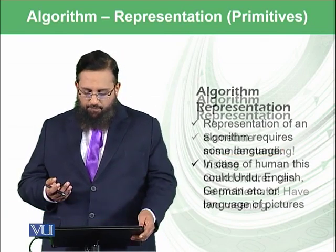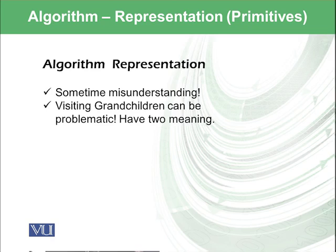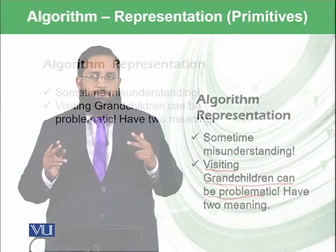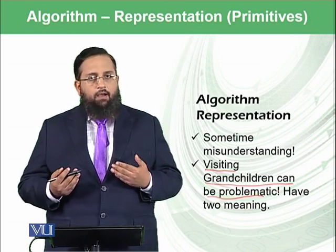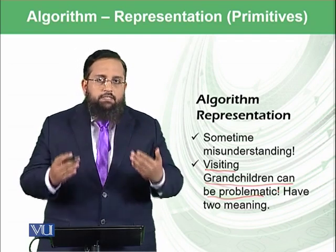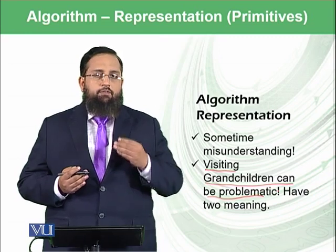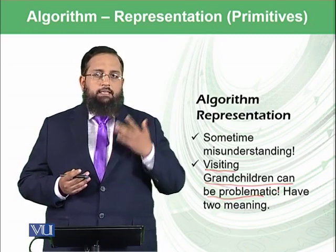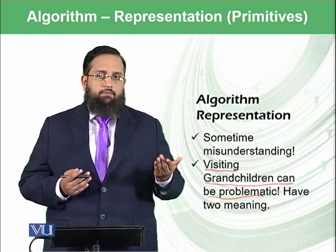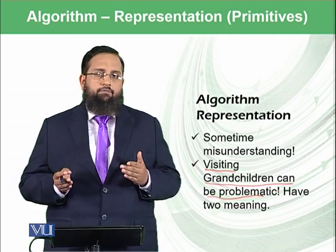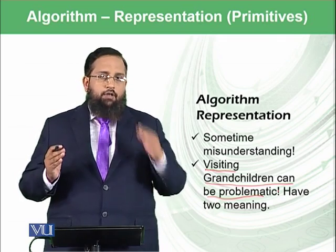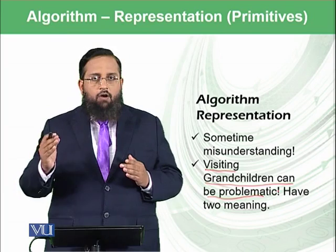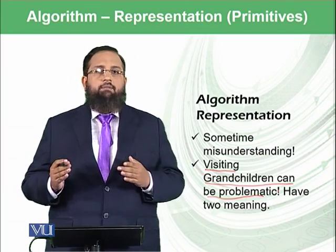For example, if I give a statement like 'visiting grandchildren can be problematic,' this might have two meanings. One is that when grandchildren visit you, that is problematic. The other meaning could be that when you visit your grandchildren, that is problematic. So even the language humans speak can have ambiguous meanings, and if a computer had such ambiguous meaning, then an algorithm defined by one person could produce different results depending on its representation.